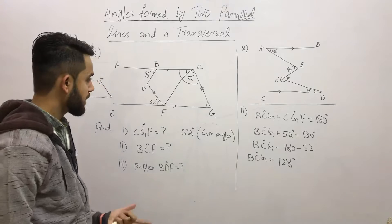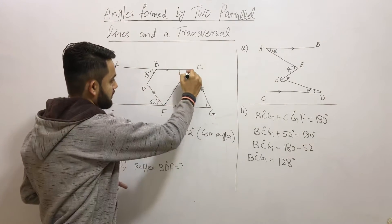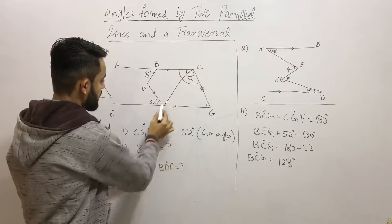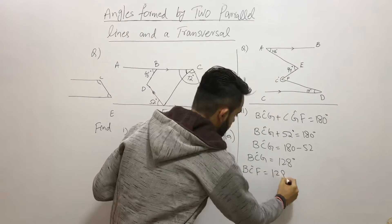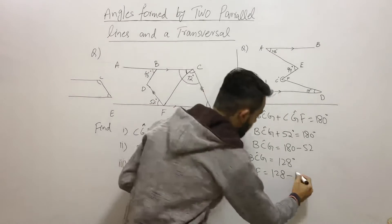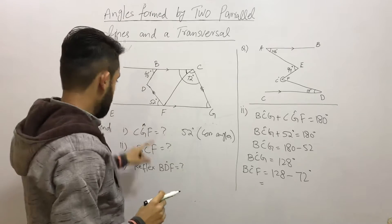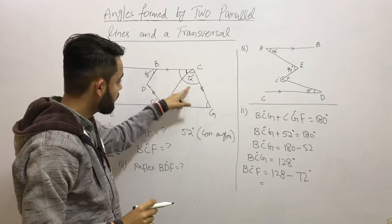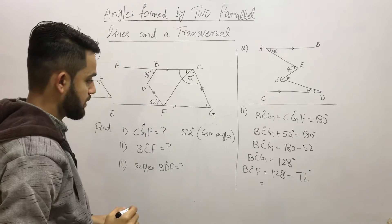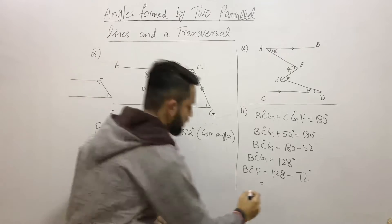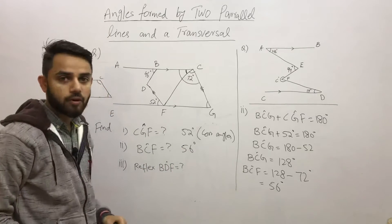Now we have the complete angle BCG as 128 degrees, and we know the given angle is 72 degrees. So angle BCF equals 128 minus 72. Subtracting gives us 56 degrees. So angle BCF is 56 degrees.